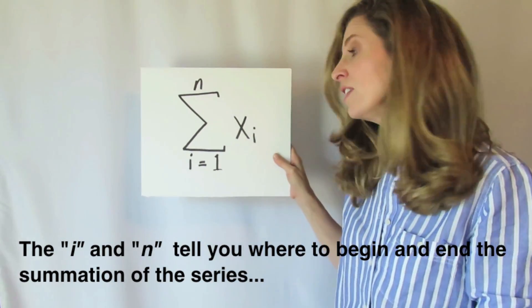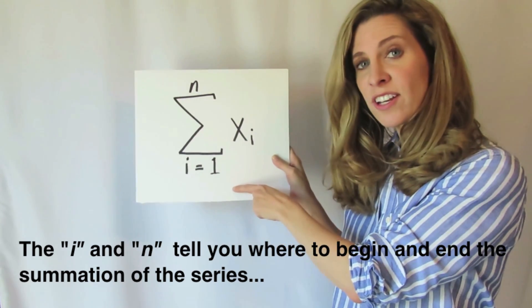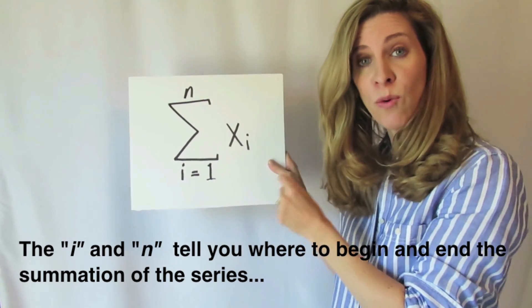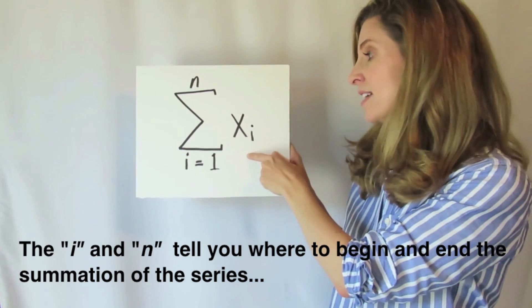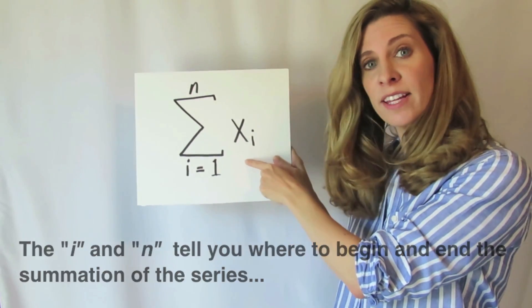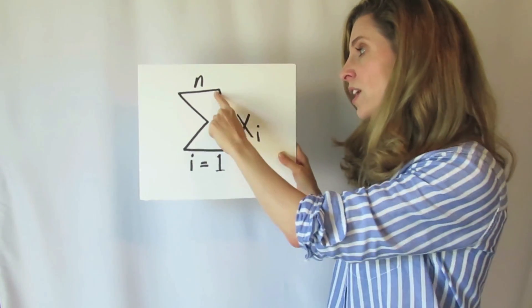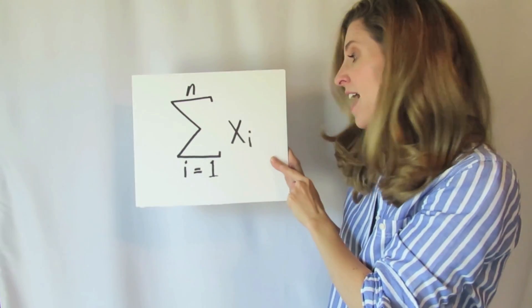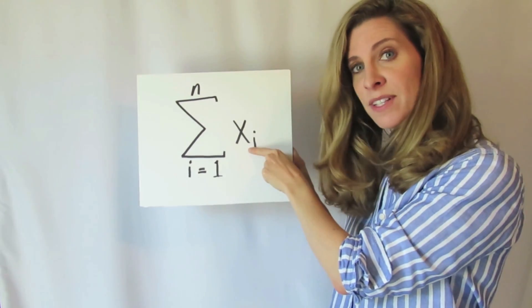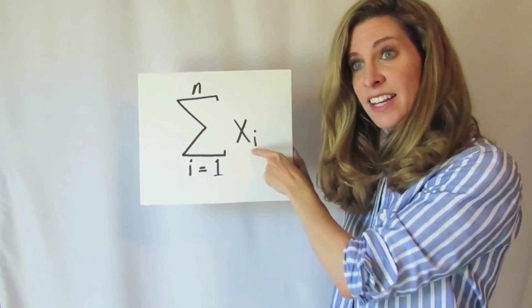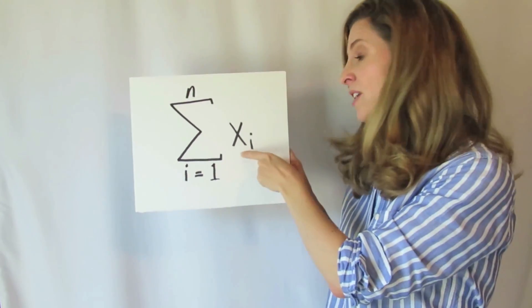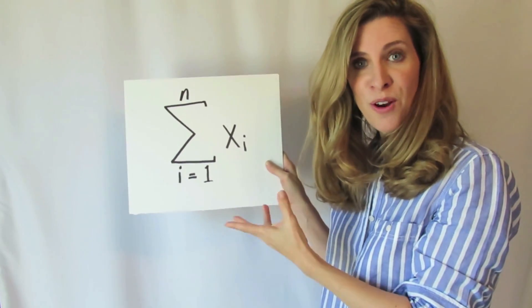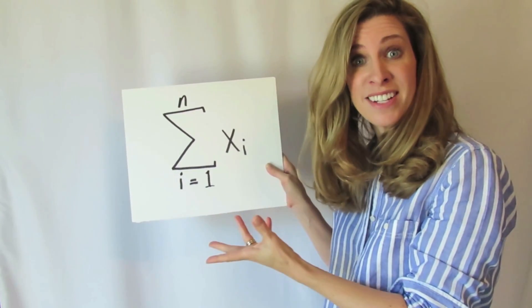The fully specified sigma notation gives you a lot of clues about what it wants you to do. When we see something that looks like this, what it's telling you to do is to sum or add all of the elements of x. In my statistics class, those elements are typically going to be observations from a variable, something that varies.